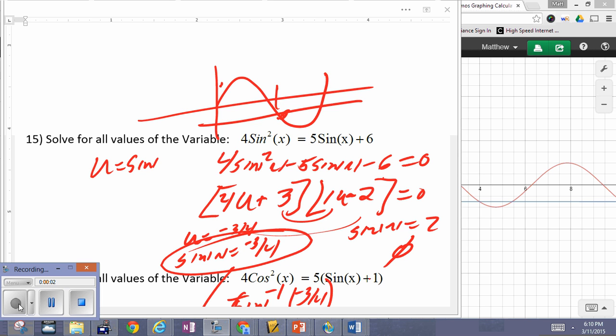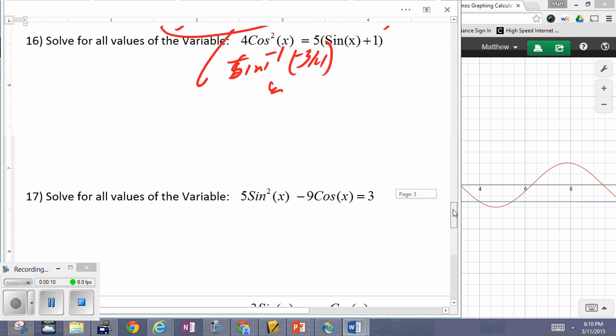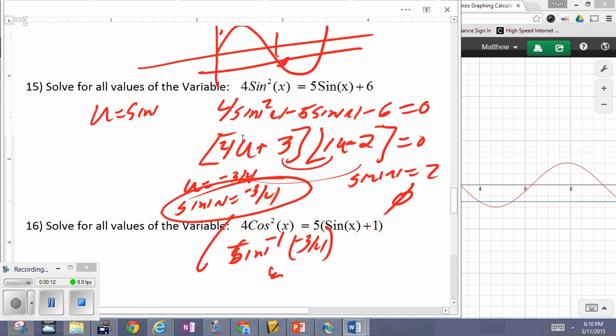Hey guys, that last video got a little lengthy and I feel like I short-changed you there. I want to come back and just verify the correct answers here. We were solving this equation. We come down to sine of x equals negative three-fourths, which of course we have to go to our calculator for. And then the other one is sine of x equals two, which has no solution.